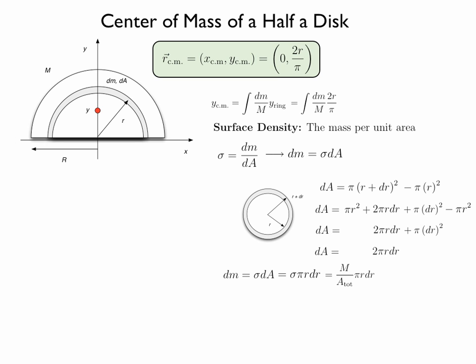For a uniform object, the surface density is equal to the average surface density, which is the total mass over the total area of the object. For the disk, the area is one half pi R squared.